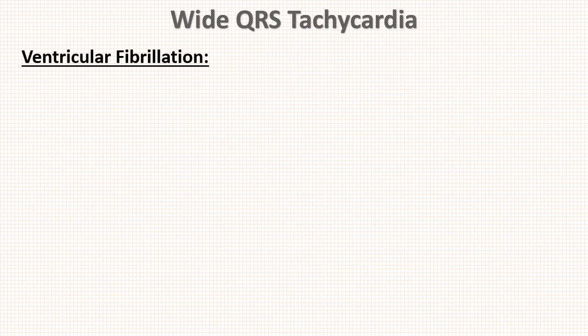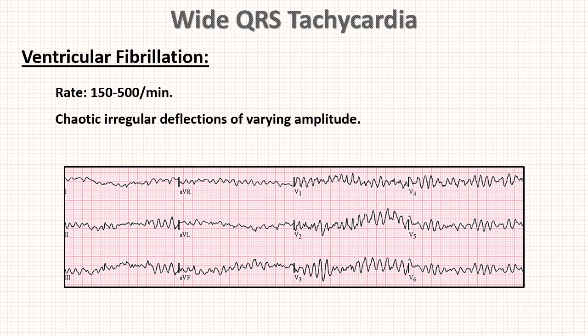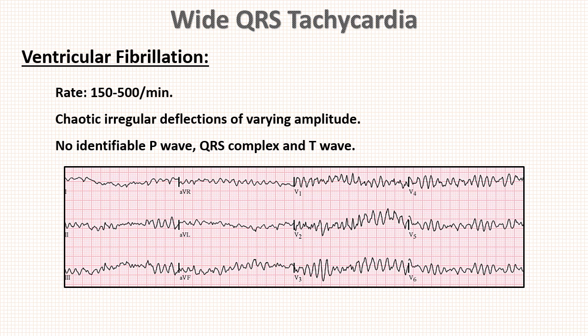Next is ventricular fibrillation, where rate ranges from 150 and can go up to 500 per minute. You can observe chaotic, irregular deflections of varying amplitude of QRS complexes. Here also there is no identifiable P wave, QRS complex, or T wave.